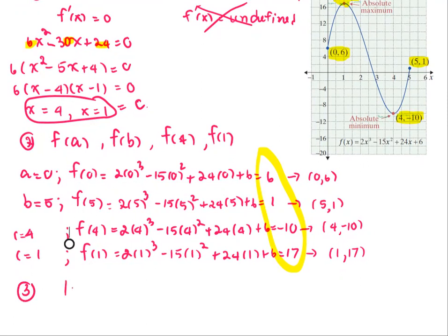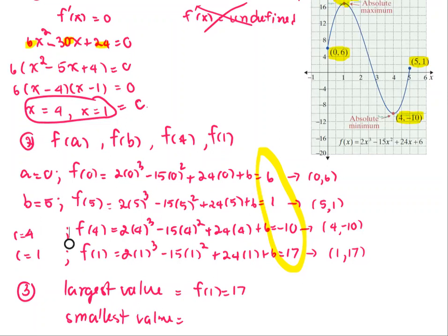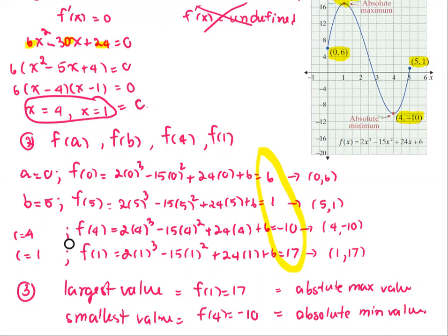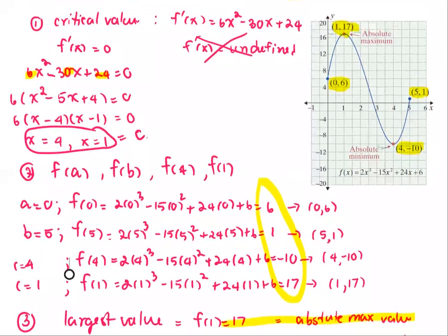Step 3: compare the results. The largest value is 17, which is f(1) — this is the absolute maximum value. The smallest value is −10, which is f(4) — this is the absolute minimum value. This is confirmed by the graph on screen. The absolute maximum occurs at x = 1, giving the point (1, 17), and the absolute minimum occurs at x = 4, with the value −10.